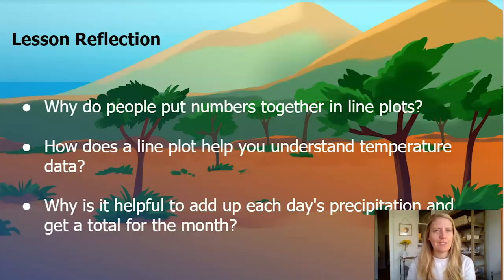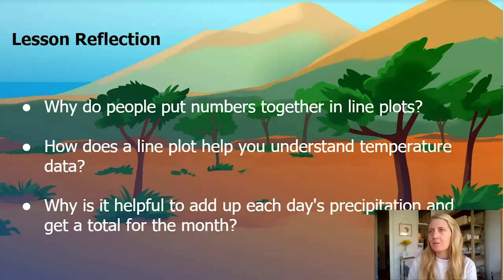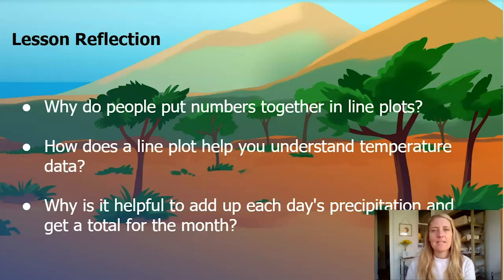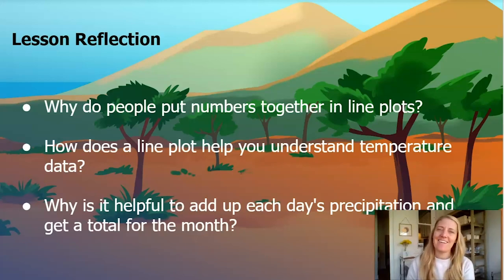You guys did a great job today. Here is your lesson reflection with a few questions. Remember, you can write them down, draw your answers, talk to a neighbor, talk to a teddy bear, talk to a tree — any of those things. Here are your three questions — you can always pause the screen: Why do people put numbers together in line plots? How does a line plot help you understand temperature data? And why is it helpful to add up each day's precipitation and get a total for the month? That is it for our lesson today. I will see you all again in chapter two, lesson three.